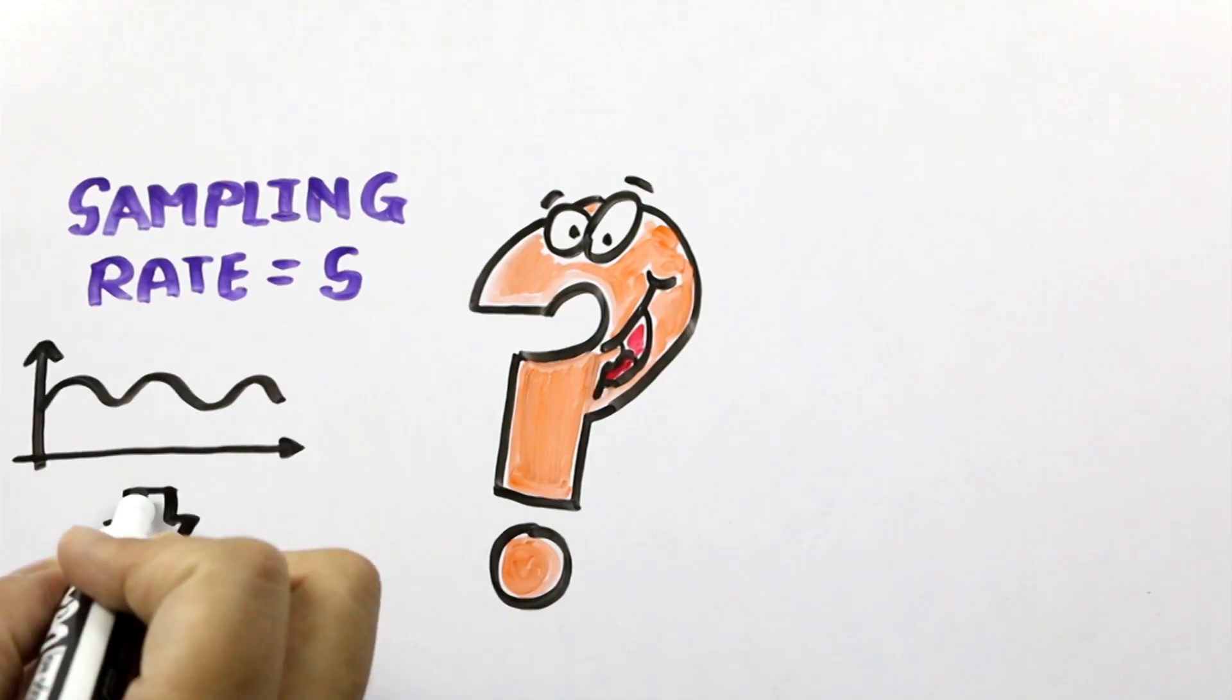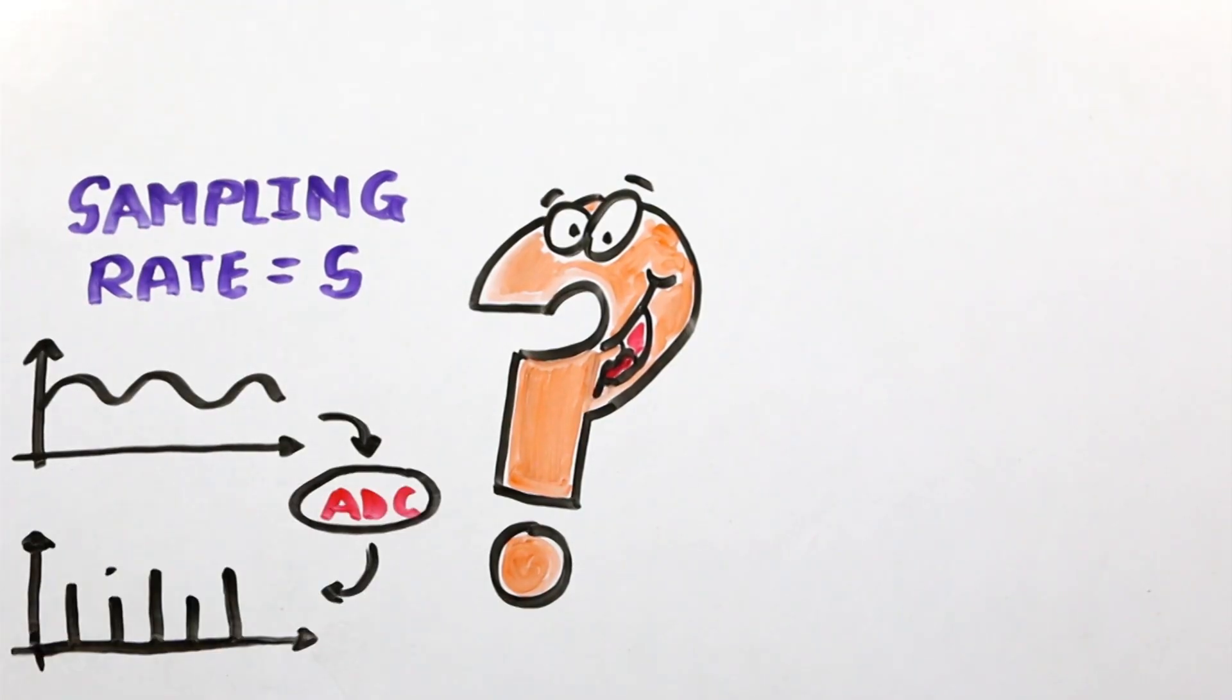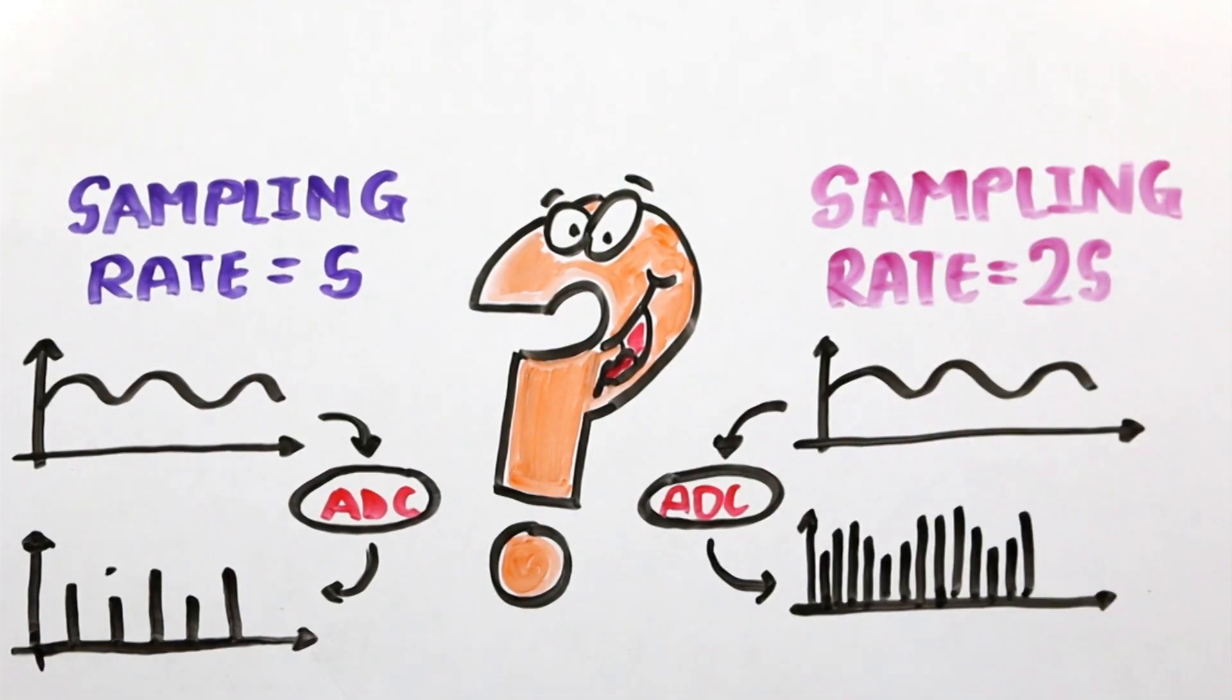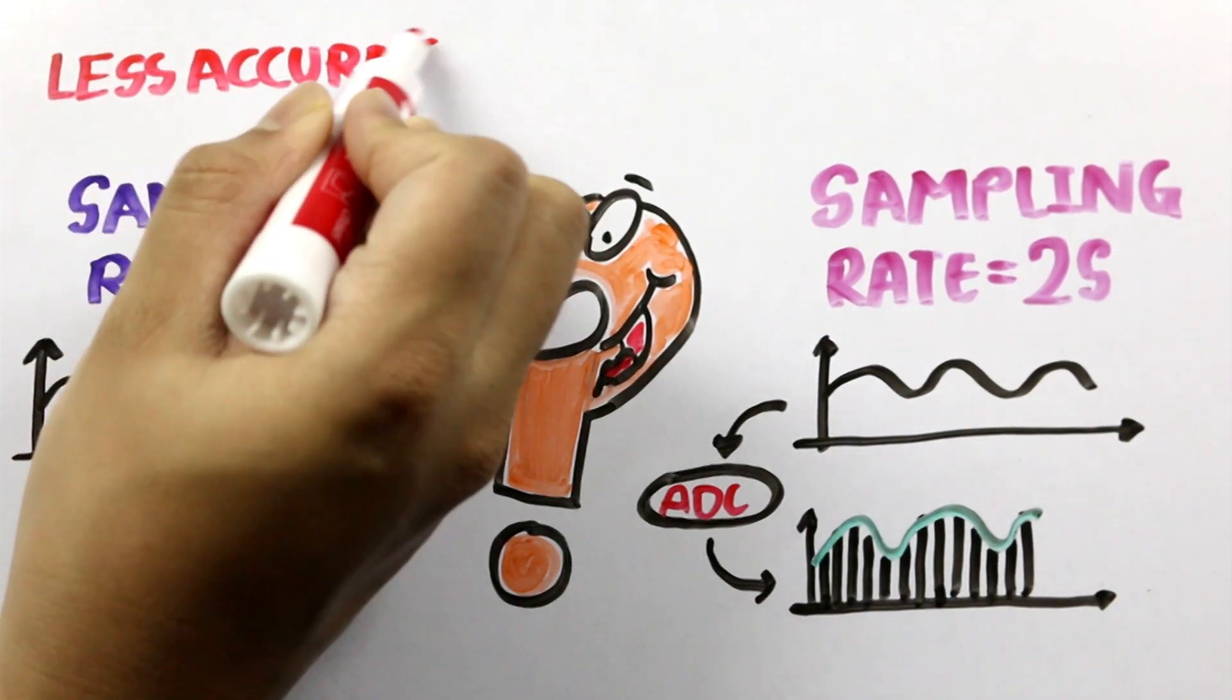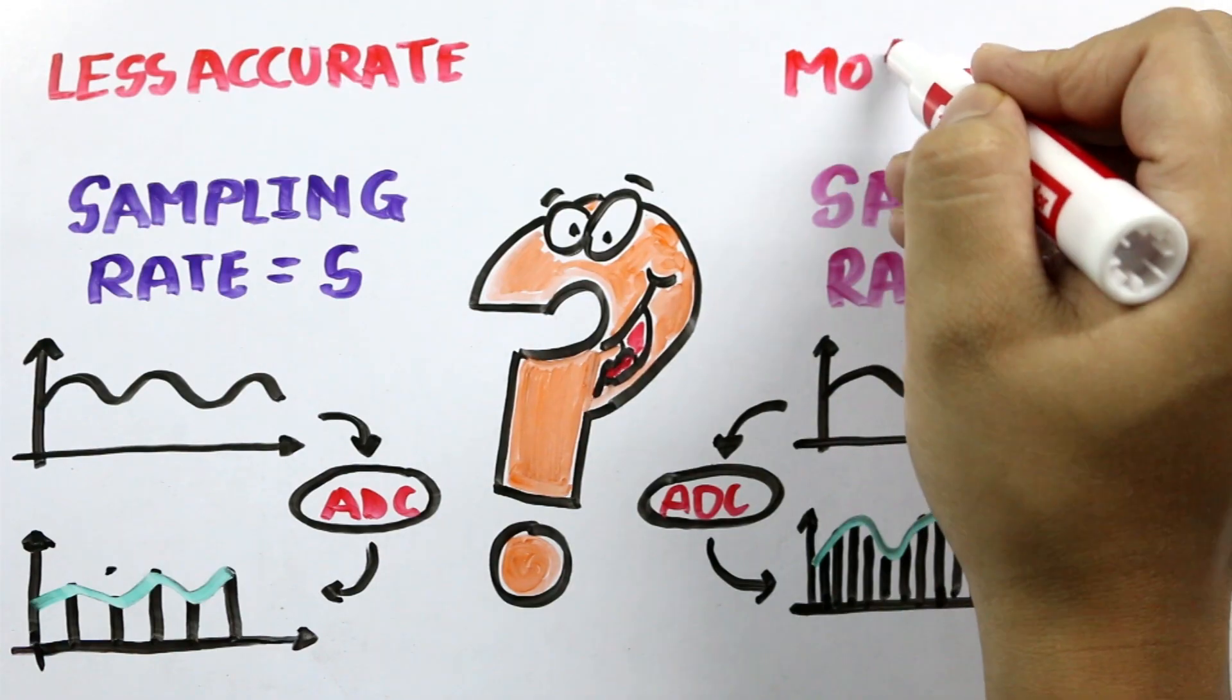I could make more measurements by measuring the sound wave twice as often, that means doubling what's called the sampling rate. Now as you can see in the bottom chart, I get twice as many measurements and my sound wave is represented by more numbers.